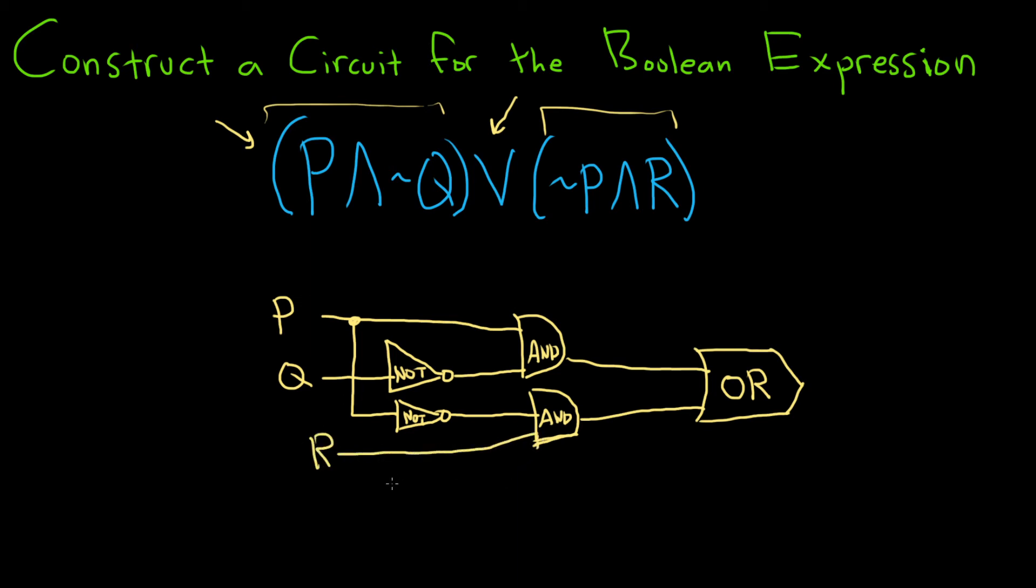We should definitely check our answer because this one was a little bit more complicated than some of the other examples that we've done. So let's go through it very carefully. So let's see. Q is going through the NOT gate. It's going to give us NOT Q. P is going through the NOT gate. It's going to give us NOT P. Whoops. NOT P. Let me just fix that. NOT P. There we go.